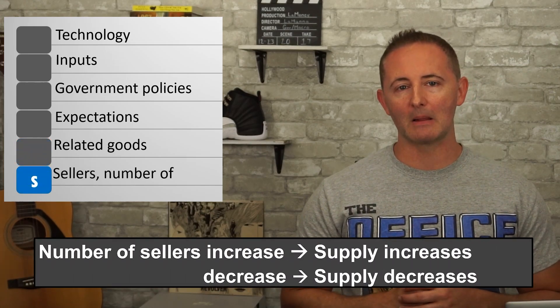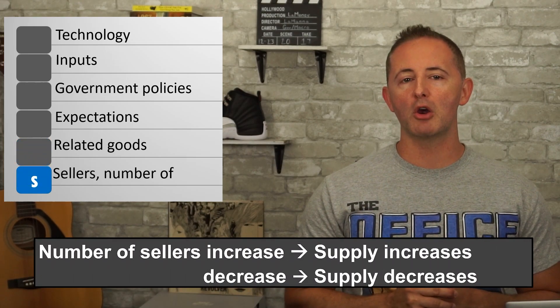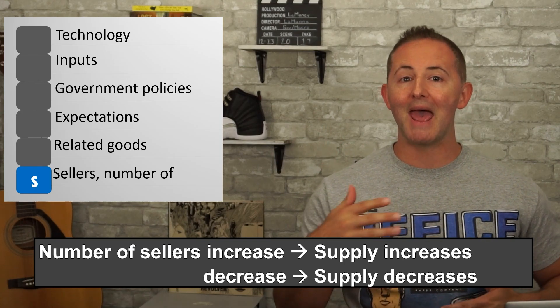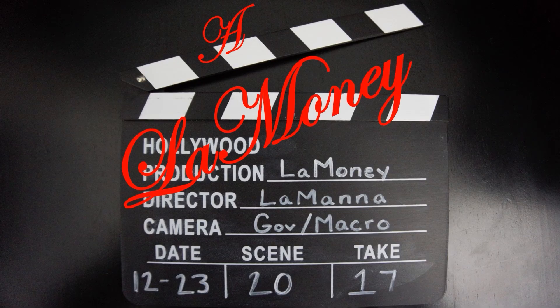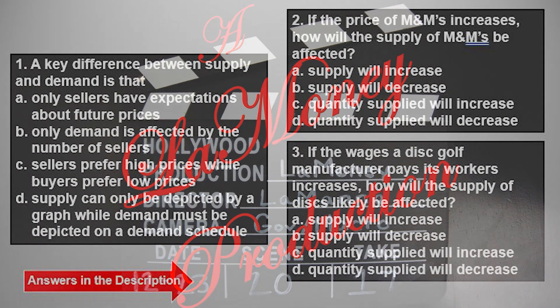Lastly, changes in the number of sellers: if more sellers enter a market, supply increases, and if sellers exit a market, supply decreases. That's it for supply. Now it's time to get supply and demand into the same room at the same time, because that's where the magic happens. Until next time, this has been a La Money Production. Thanks for watching — please hit that like button and subscribe if you haven't already. Check out the description for links to practice question answers and some great study aids.